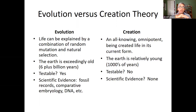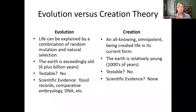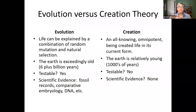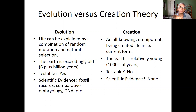Evolution says life can be explained by random mutation and natural selection — nature selecting for or against a given mutation. Creationism, in the Christianity version, says an all-knowing omnipotent being created life in its current form. Another interesting point is the age of the earth: evolutionists, based on science, say the earth is more than six billion years old. Creationist theory, Christianity literally interpreted, says the earth is relatively young — measurable in thousands of years.